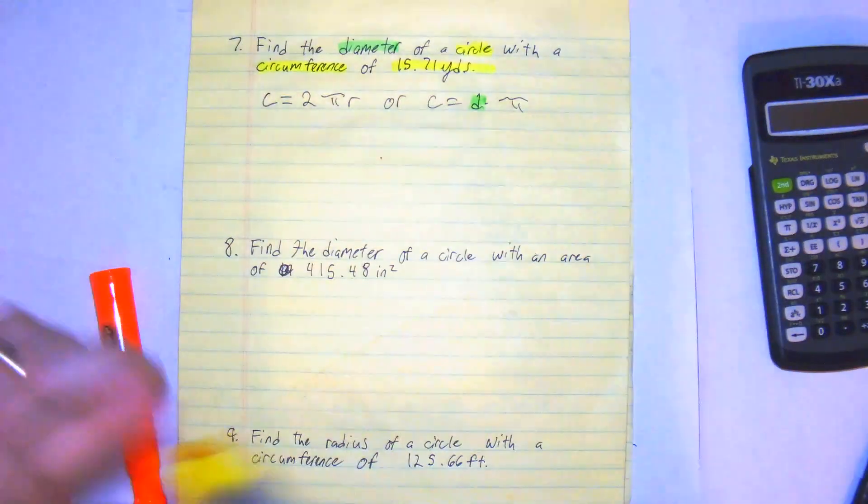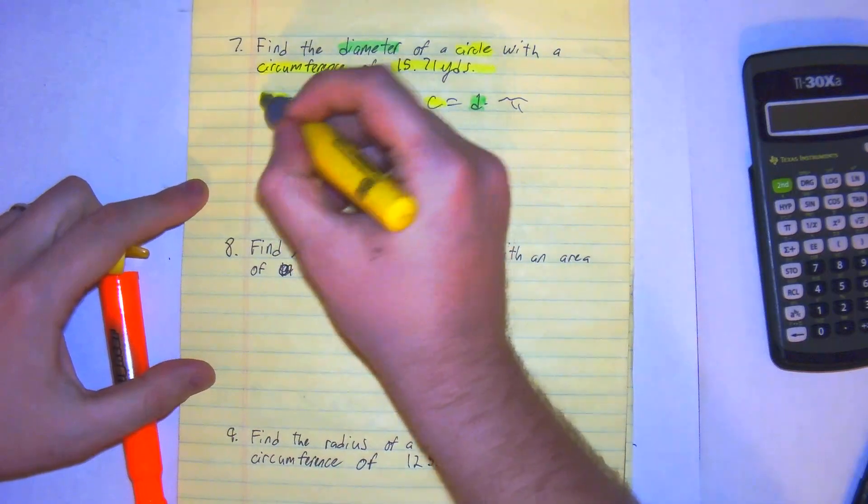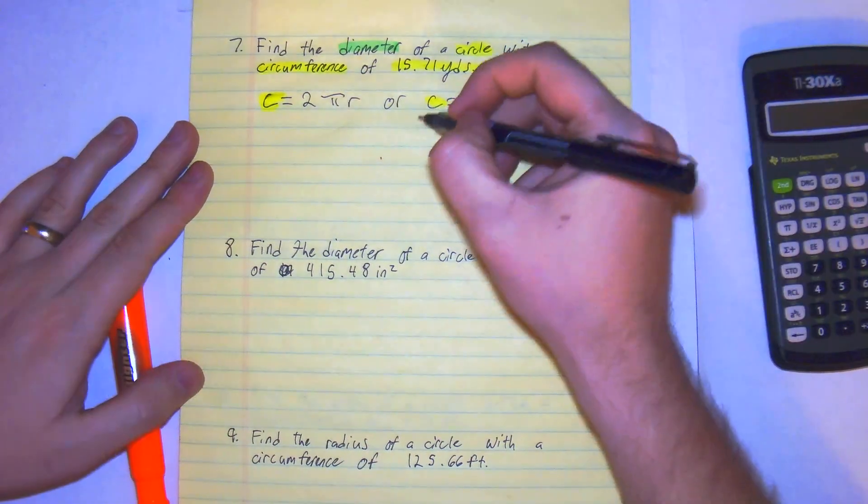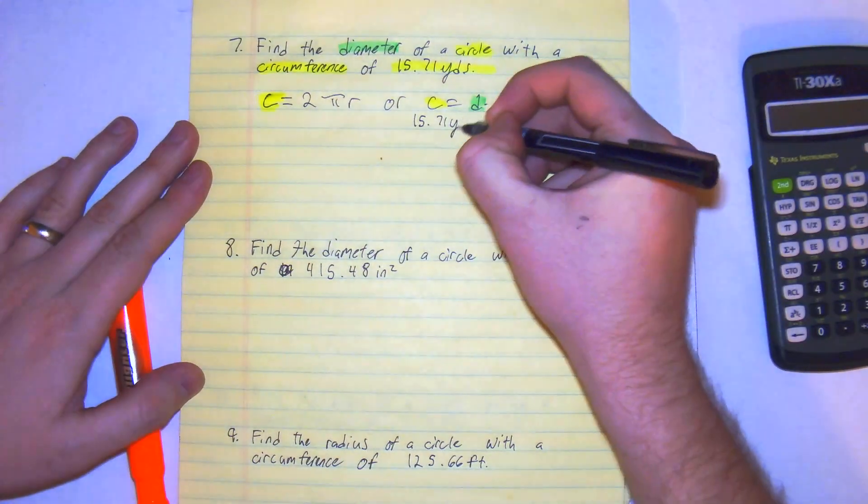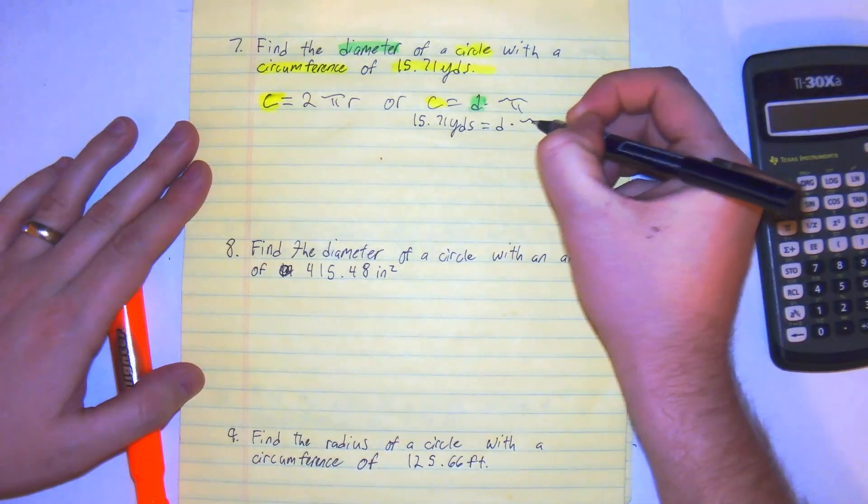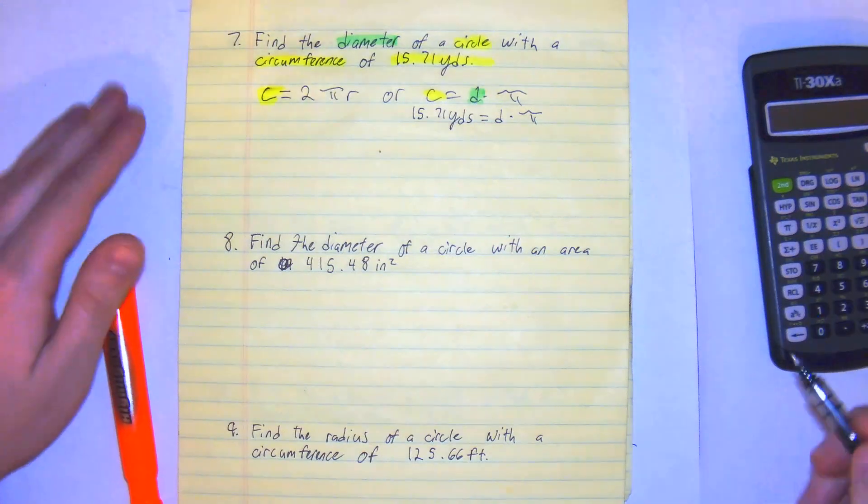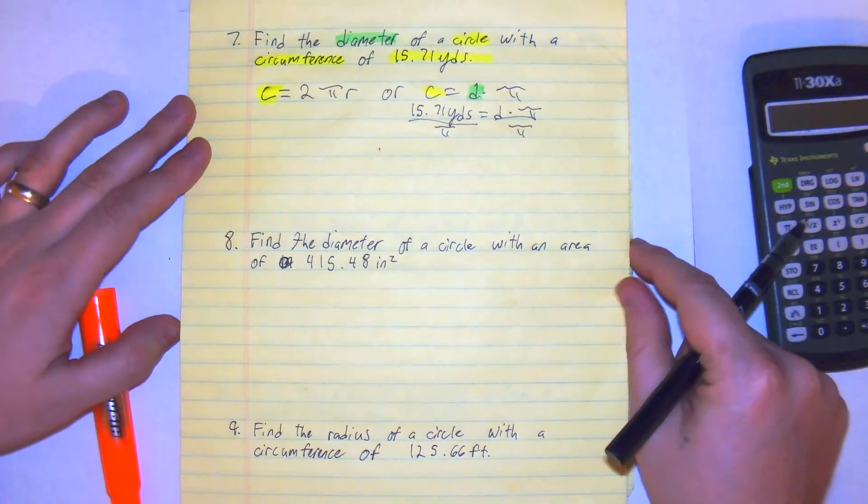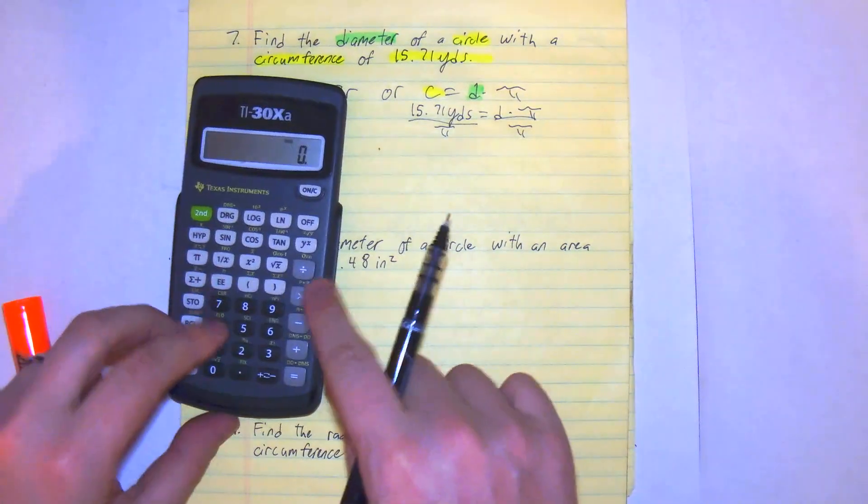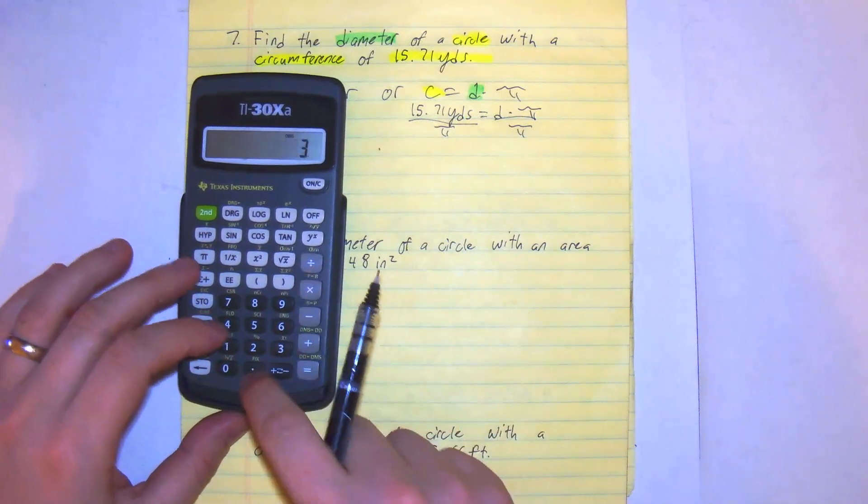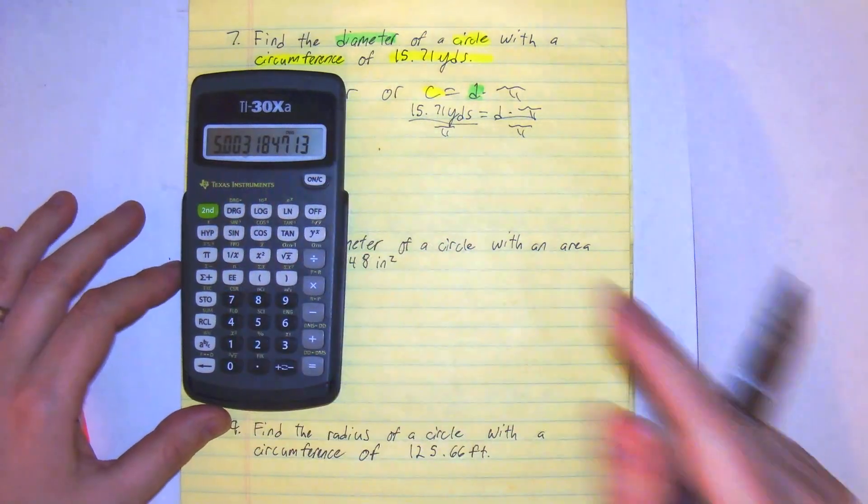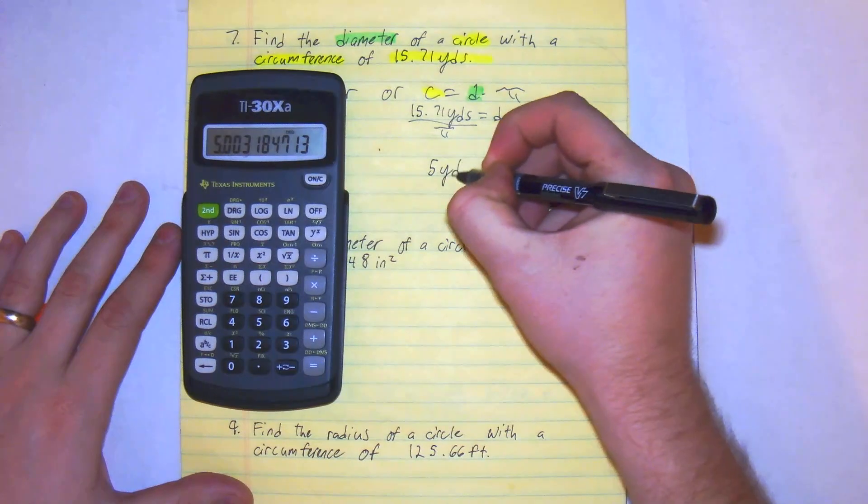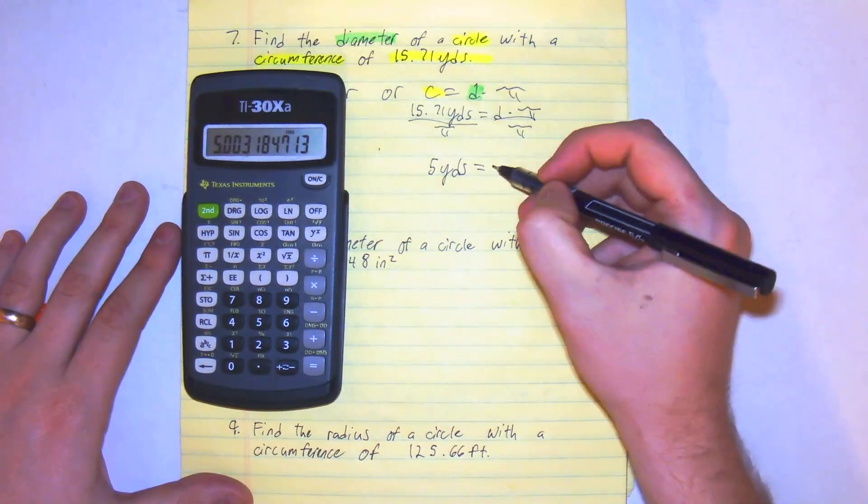So we have circumference. Both formulas would work, but it would be smarter if you see C equals d times π. So then we have 15.71 yards equals d times π. From here, I'm going to divide both sides by the value of π. For π, I'm just going to use 3.14. 15.71 divided by 3.14, so we get a diameter of about 5. So 5 yards equals d.